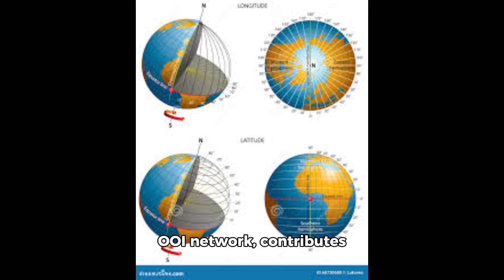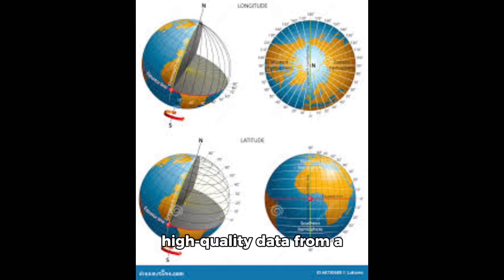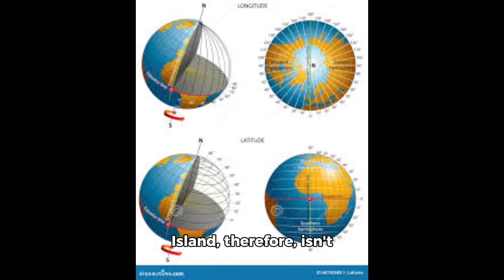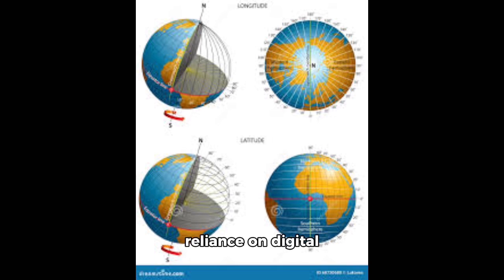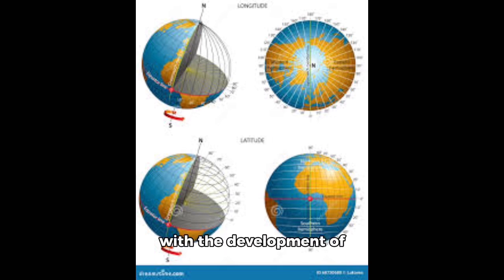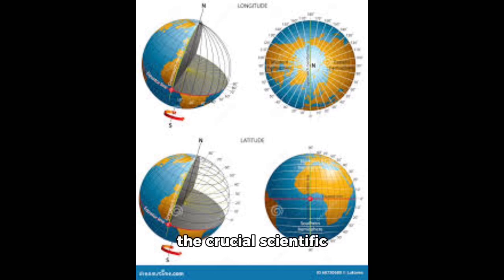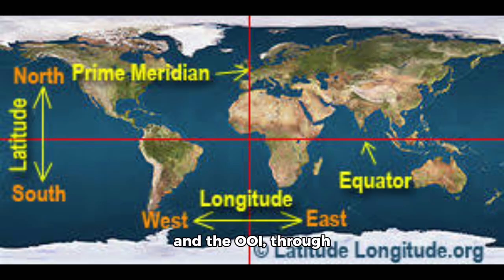The Soul Buoy, as part of the OOI network, contributes to this broader effort by providing long-term, high-quality data from a key location in the Atlantic. The history of Null Island, therefore, isn't one of human settlement, exploration, or conquest. It's a history of data management — a reflection of the increasing reliance on digital information in our lives. Its story is interwoven with the development of GIS, GPS technology, the growing volume of location-based data, and the crucial scientific endeavors of organizations like NOAA and the OOI.